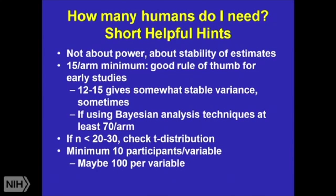Why is this? When you have 12 to 15 values, you actually get a somewhat stable variance equation. I'm not saying it's right — it could be that you have weird sampling and the variance is off because of bias. But the equation itself for variance stabilizes between sometimes as low as 10, but usually 12 to 15 numbers in it.